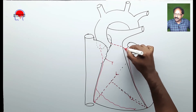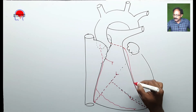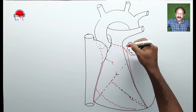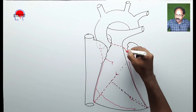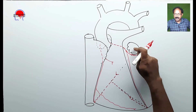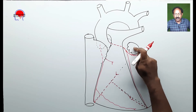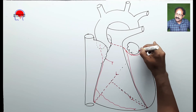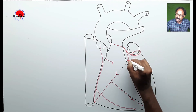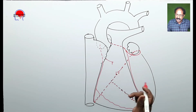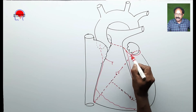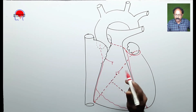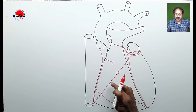The next branch of the left coronary artery — after the anterior interventricular artery — is the circumflex artery, which goes around and encircles the heart through the left aspect. It runs in the groove between the left auricle and the left ventricle, reaches the left margin of the heart, then turns posteriorly and runs through the posterior coronary sulcus. There, the circumflex artery anastomoses with the right coronary artery to the left of the crux.